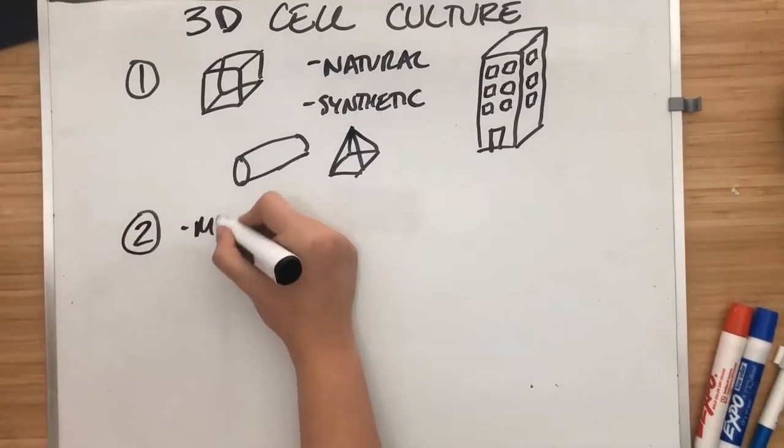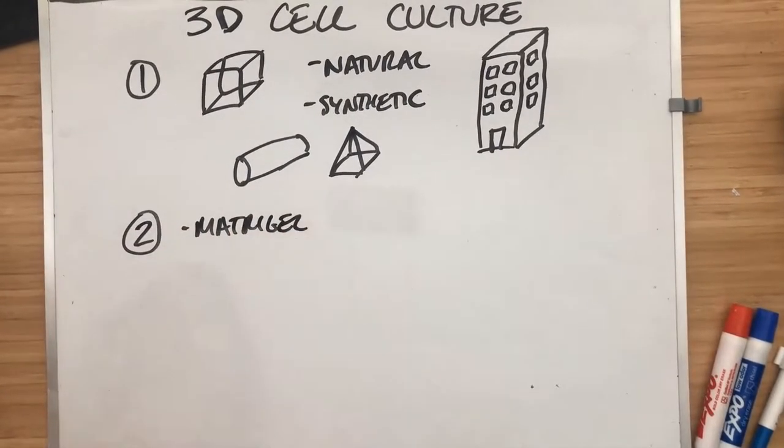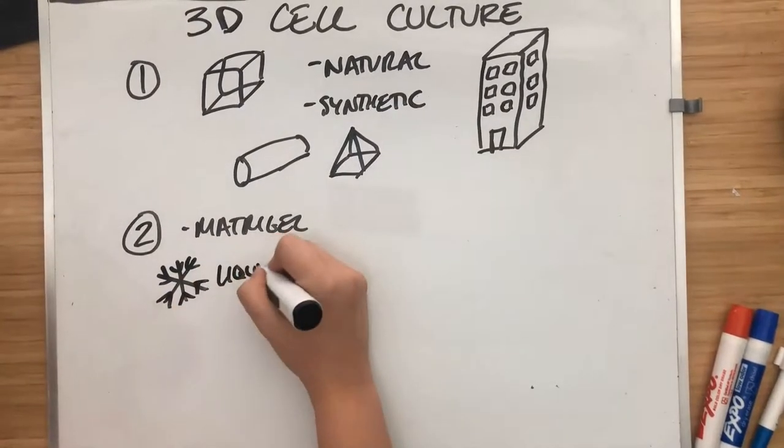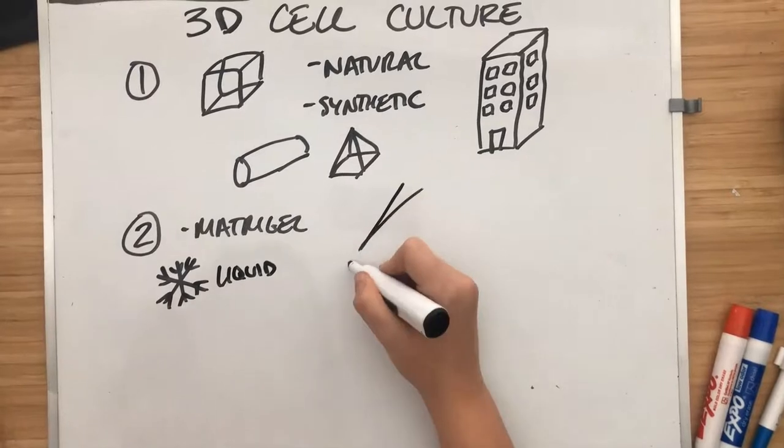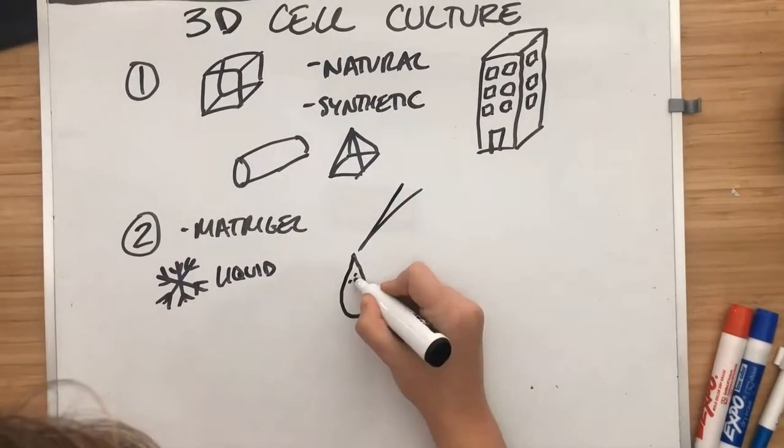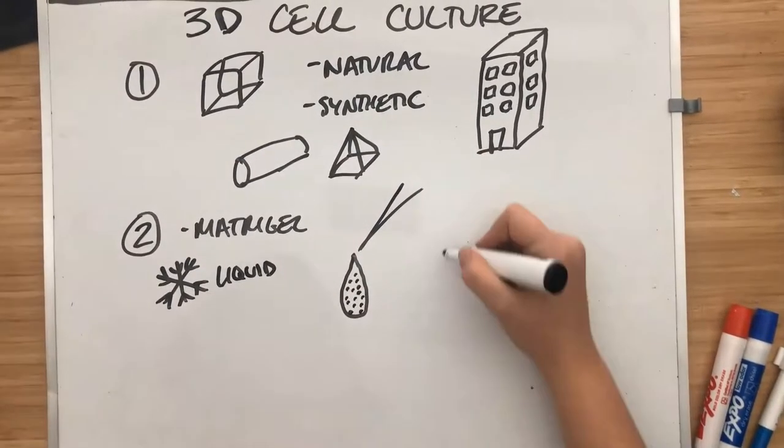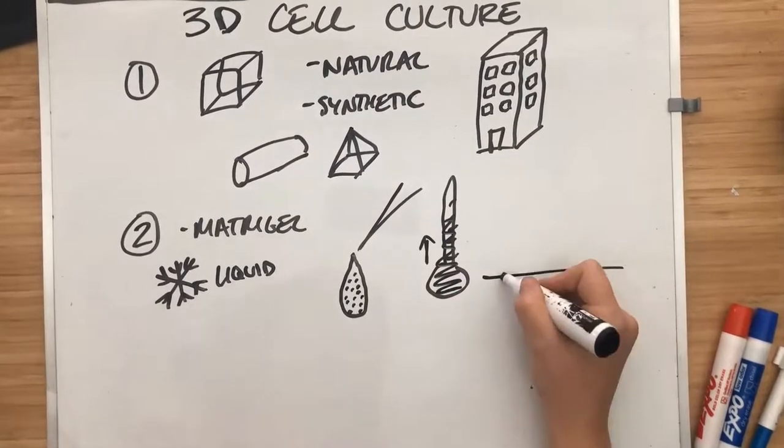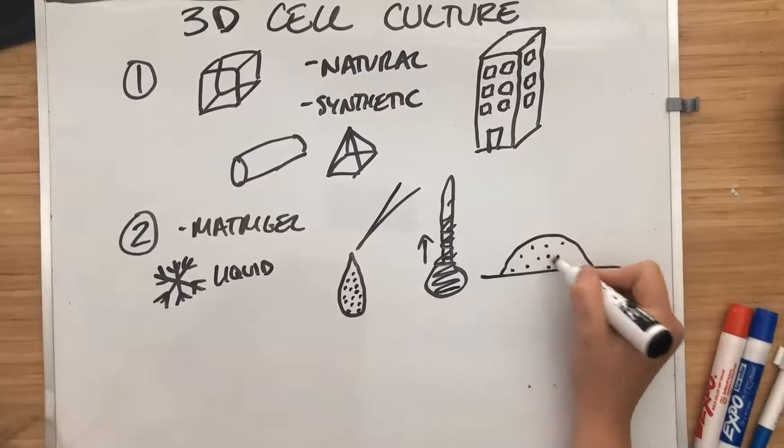Another method is to use a hydrogel. Matrigel is a really popular one. These are liquid when they're cold. So when they're cold, we fill that liquid up with our cells and create a droplet. That droplet gets placed onto a flat surface. And when the temperature heats up a little bit, it solidifies into a solid gel that's 3D and contains our cells.